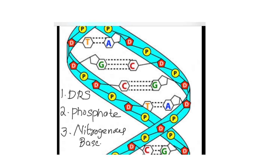This is the DNA molecule, composed of three units: deoxyribose sugar, phosphate, and nitrogenous bases. The blue shaded region is the sugar-phosphate backbone. The nitrogenous bases are adenine, guanine, thymine, and cytosine. So a DNA molecule is composed of three units: deoxyribose sugar, phosphate, and nitrogenous base.